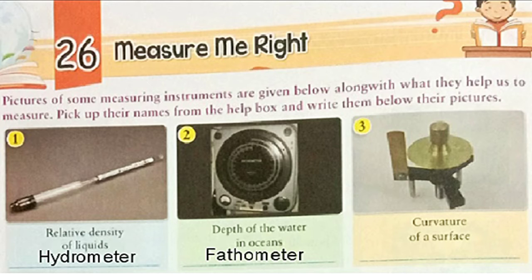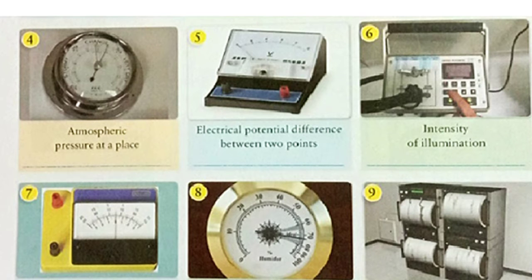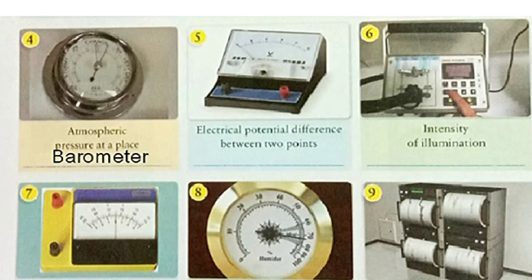Write its name here. Now we will see our question number 4. This instrument is used to measure atmospheric pressure at a place. Yes, you are right. It is barometer. Now let's see our question number 5. This instrument is used to measure electrical potential differences between two points. It is voltmeter.